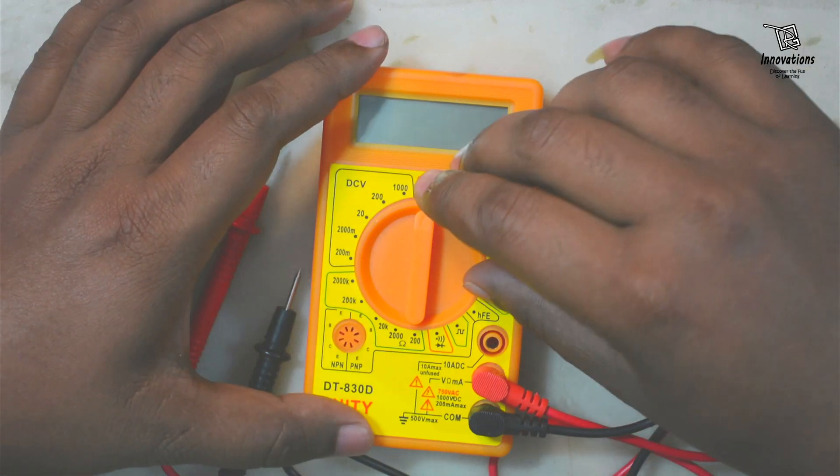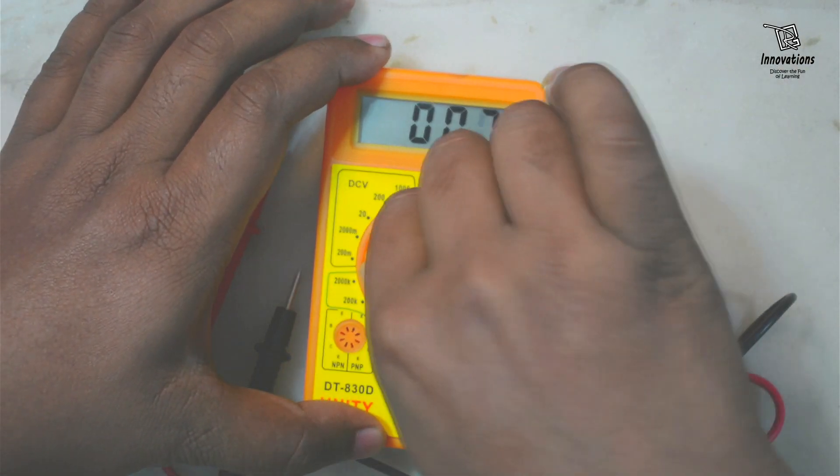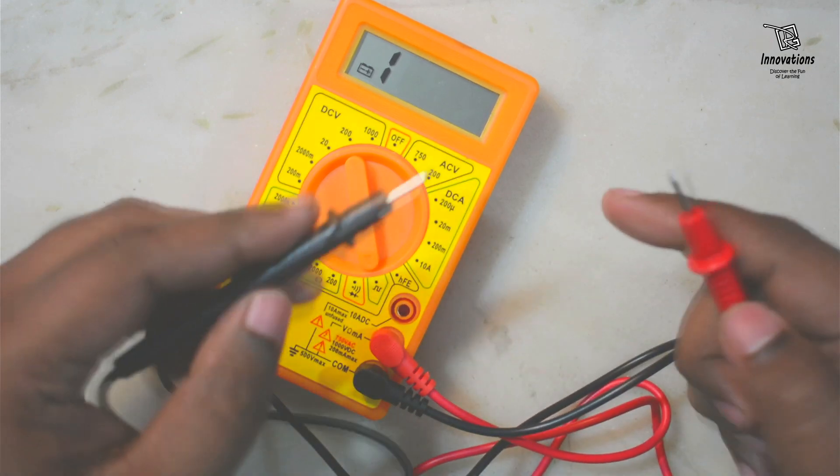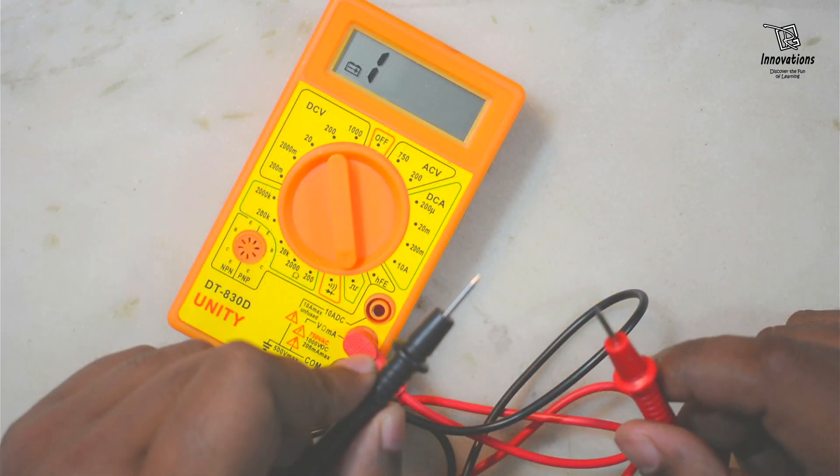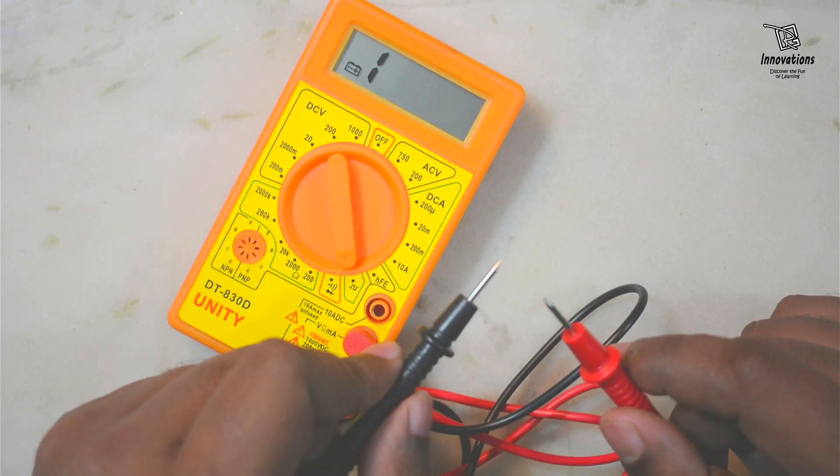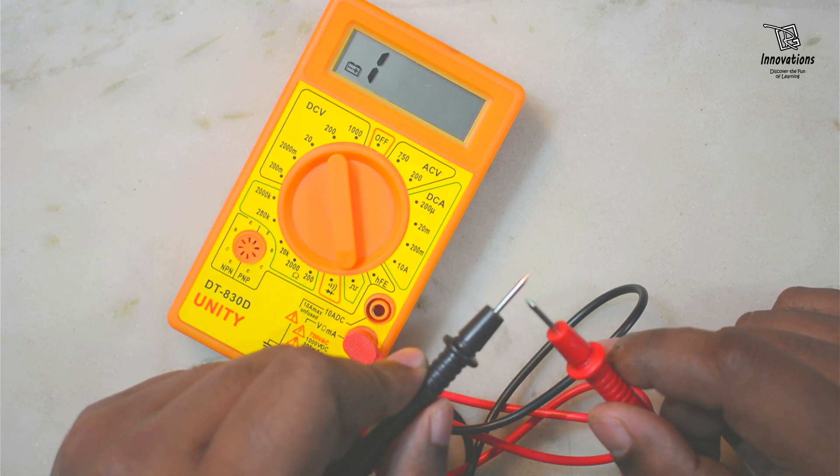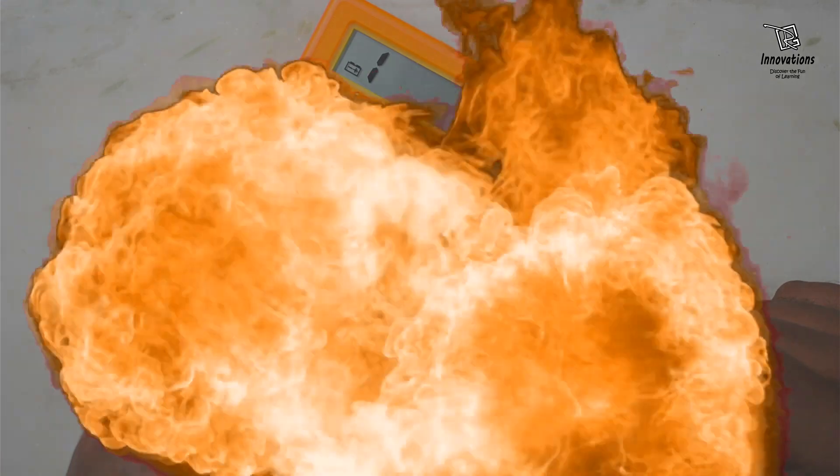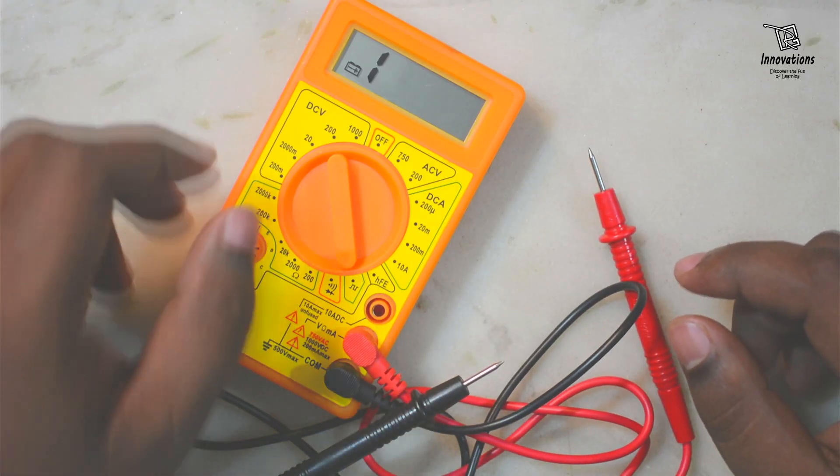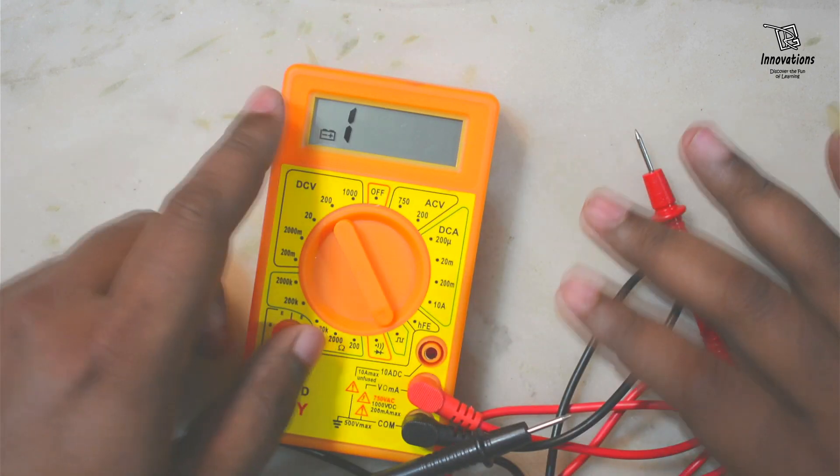So first set the multimeter to the square wave function. Now I am going to touch the pins. Hold your breath. I am just going to touch the pins at the count of three. Three, two, one, zero. That was just for fun.